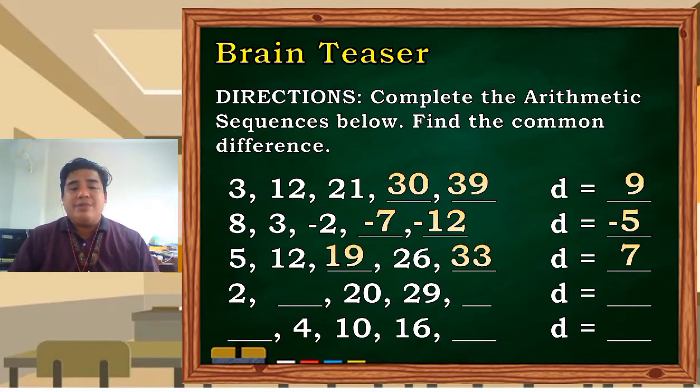Next: 2, blank, 20, 29, blank. So the first blank is 11, and the last blank is 38. Why did we get that? We are adding 9.